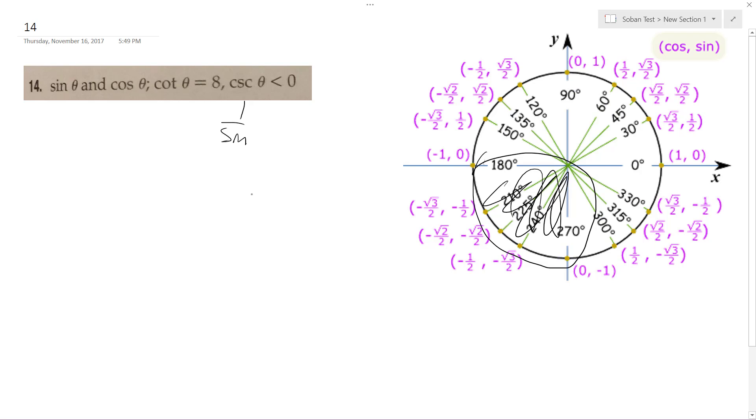All right, so cotangent, this is cosine over sine, so essentially 8 over 1, which means that this is going to be equal to negative 8, and the y component's going to be equal to negative 1.